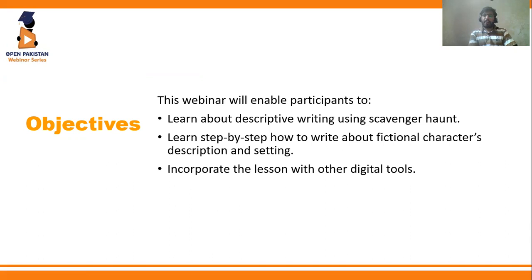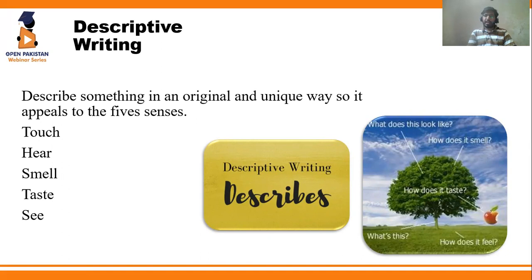The next objective is learning step by step how to write fictional character descriptions and settings — exploring how we can write about the description of fictional characters and create our own. The third and final objective is incorporating the lesson with other digital tools. There are many online tools easily available, and we can use this scavenger hunt to encourage learners to explore digital tools and create their own stories using pictorial storytelling, making them wonderful storytellers as well.